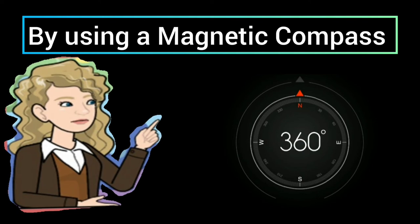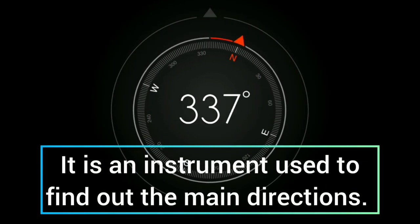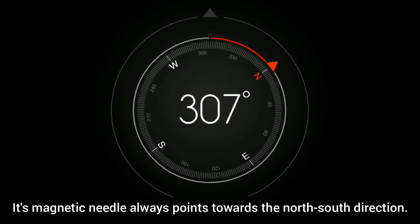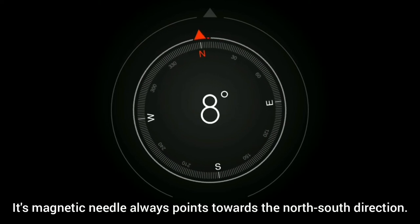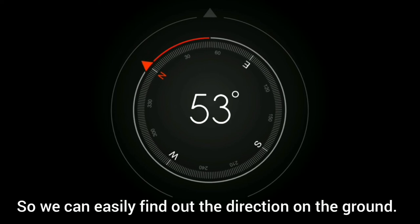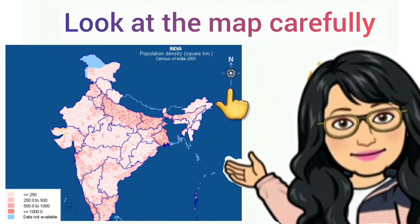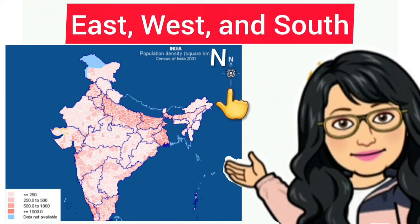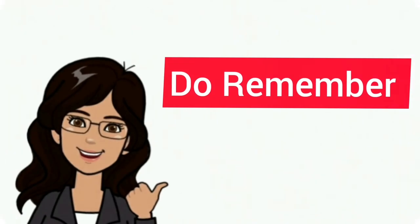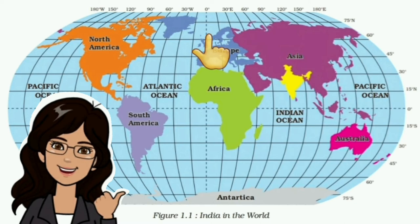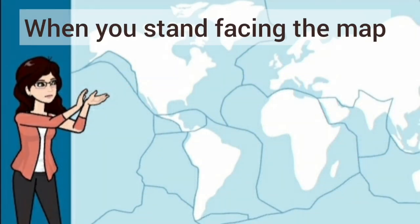A magnetic compass is an instrument used to find out the main directions. Its magnetic needle always points towards the north-south direction, so we can easily find out the direction on the ground. On a map, you will notice an arrow marked with the letter N at the upper right-hand corner — this arrow shows the north direction. When you know the north, you can easily find out the other three directions: east, west, and south. If north is not shown on a map, the top of the map is taken as north and the bottom as south. When you stand facing the map, the right-hand side is east and the left-hand side is west.